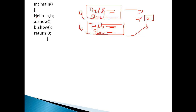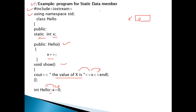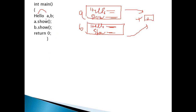جب Hello کا object a بن گیا، تو constructor execute ہوگا۔ Constructor کیا کرے گا؟ x کی جو بھی value ہے اس میں ایک کا increment لگا دے گا۔ So whenever we create an object of Hello, the constructor will be executed. Inside the constructor we have x++, so x کی value ایک ہو جائے گی — one.